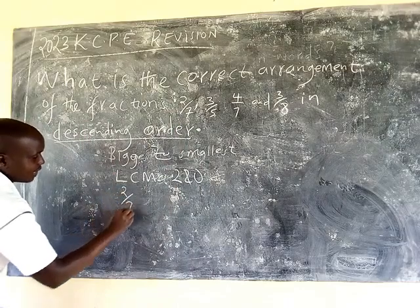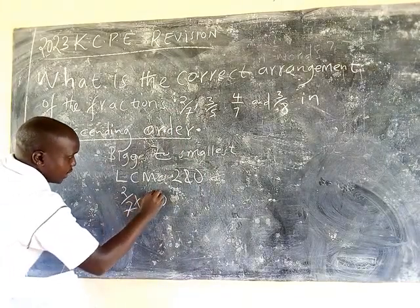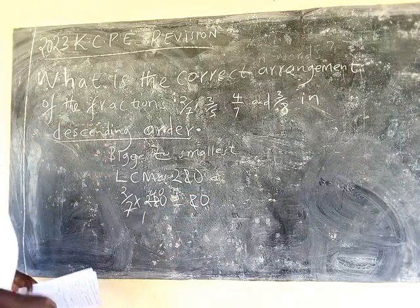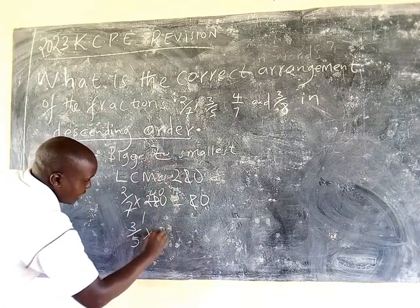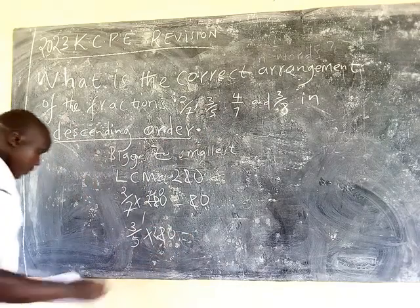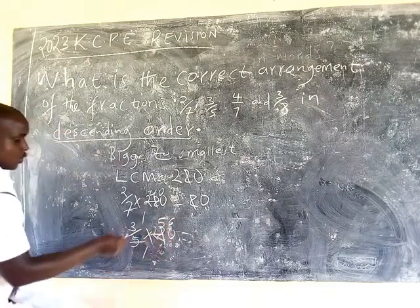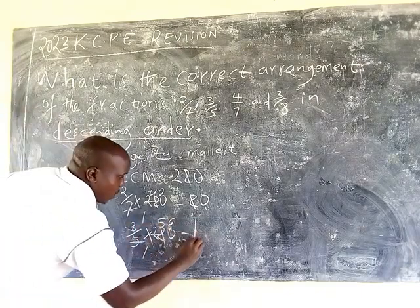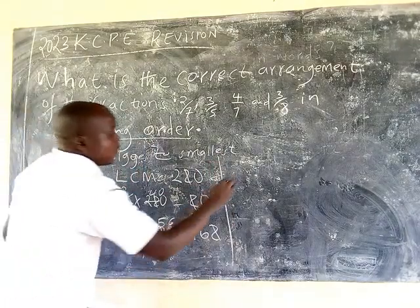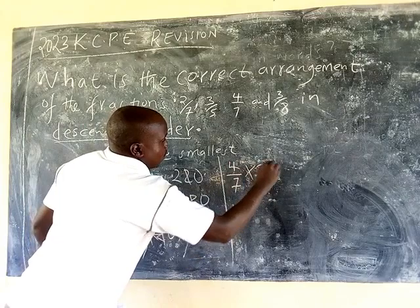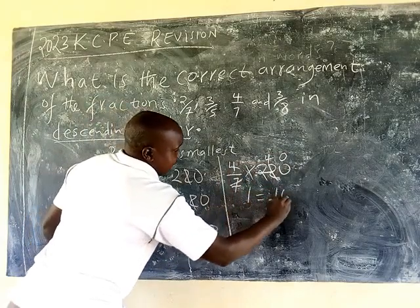So we now convert each fraction using 280 as the common denominator. For 2/7: 280 divided by 7 is 40, times 2 gives 80. For 3/5: 280 divided by 5 is 56, times 3 gives 168. For 4/7: 280 divided by 7 is 40, times 4 gives 160.